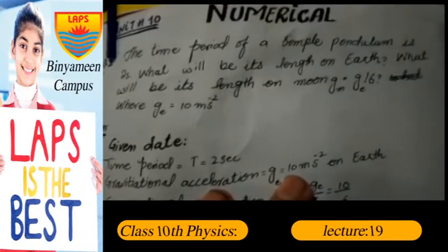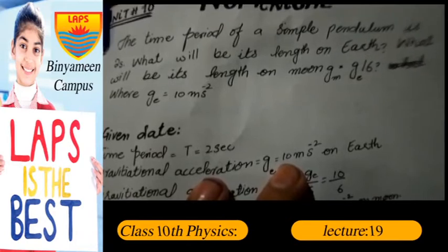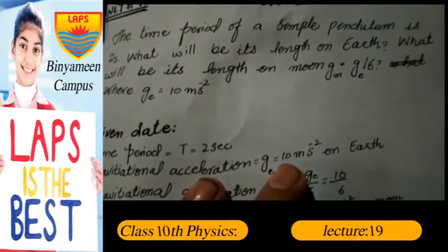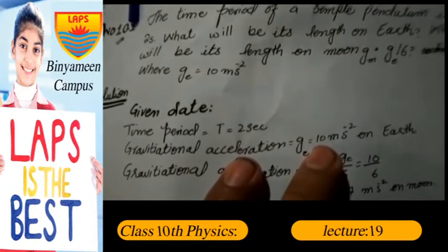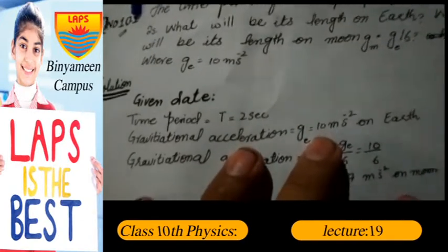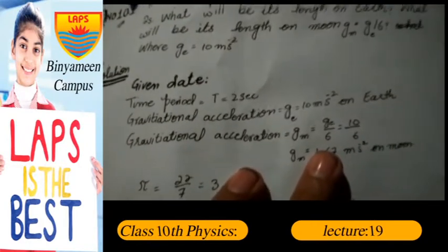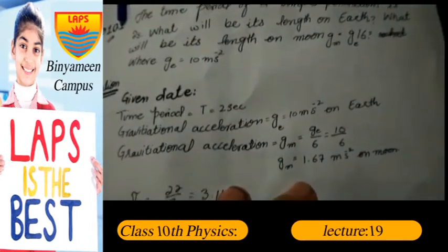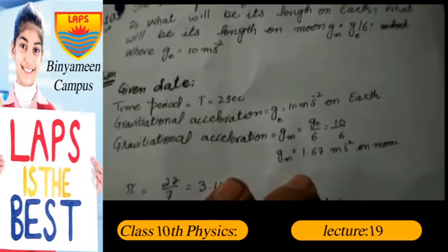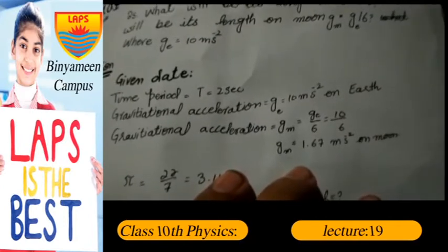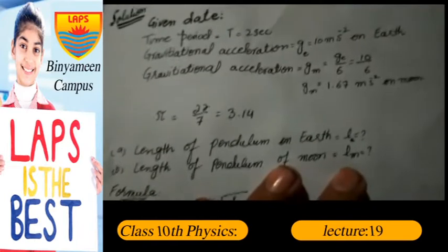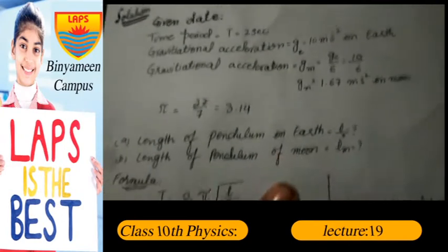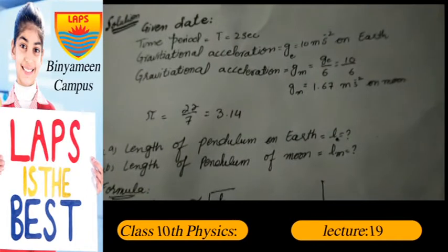What will be its length on the Moon? Gravitational acceleration on Moon is g_m = g_e / 6, where g_e (gravitational acceleration on Earth) is 10 m/s². So g_m = 10/6 = 1.67 m/s². Given data: time period T = 2 seconds, g_e = 10 m/s², g_m = 1.67 m/s², and π = 22/7 = 3.14.